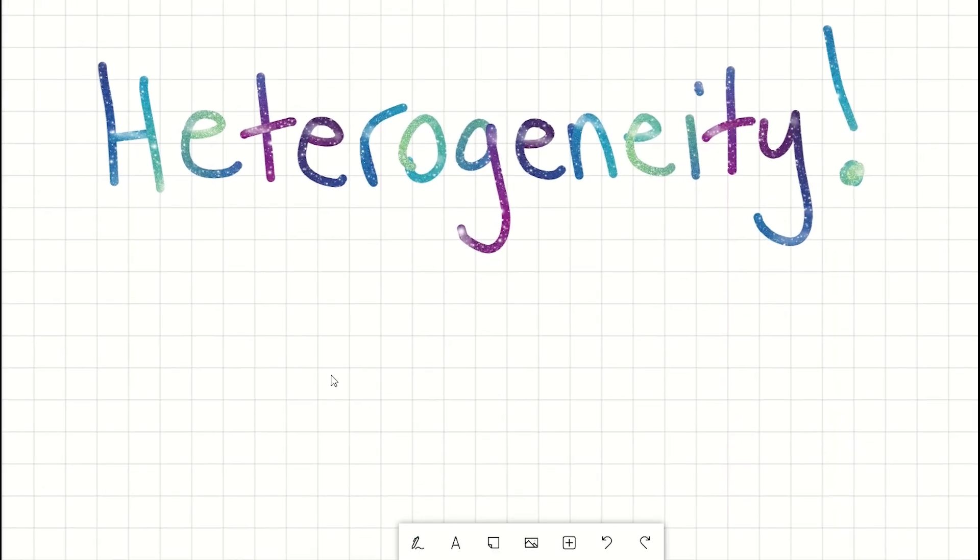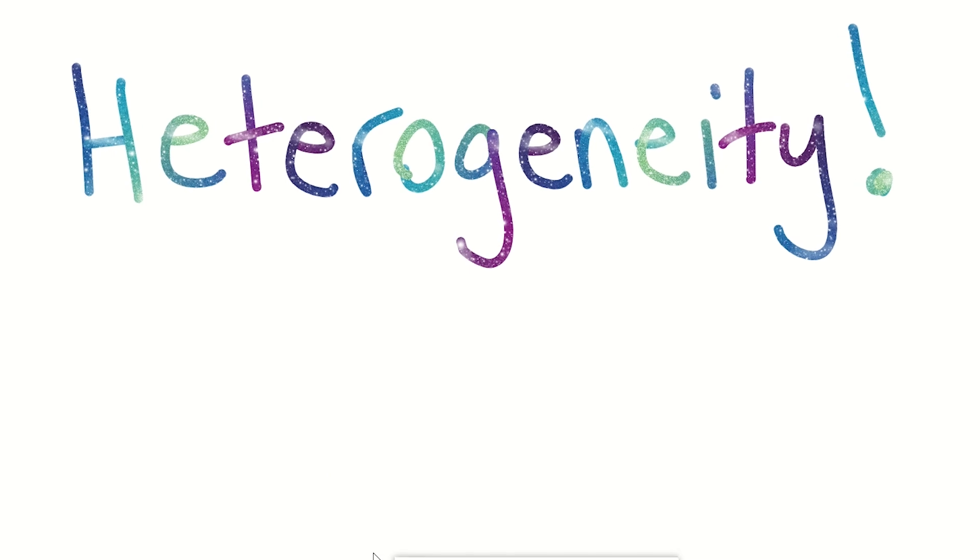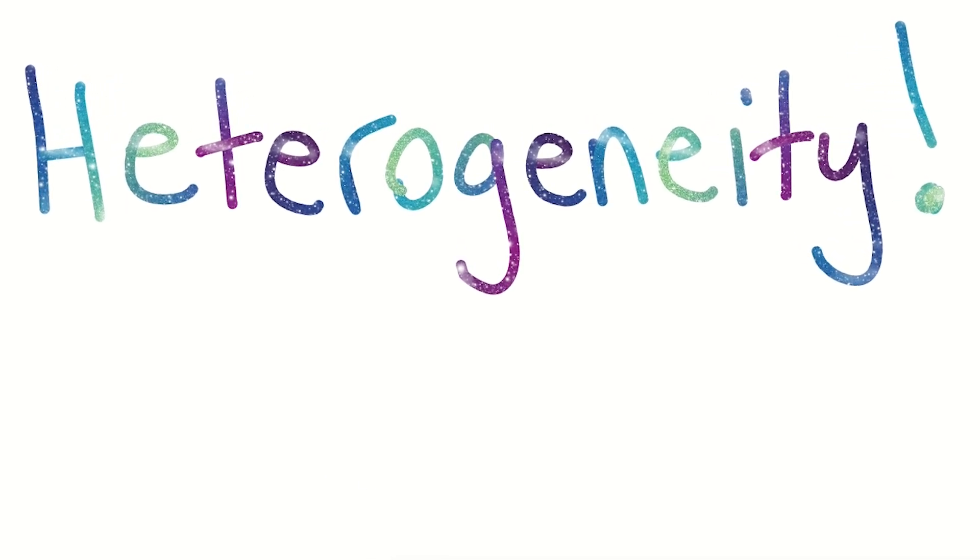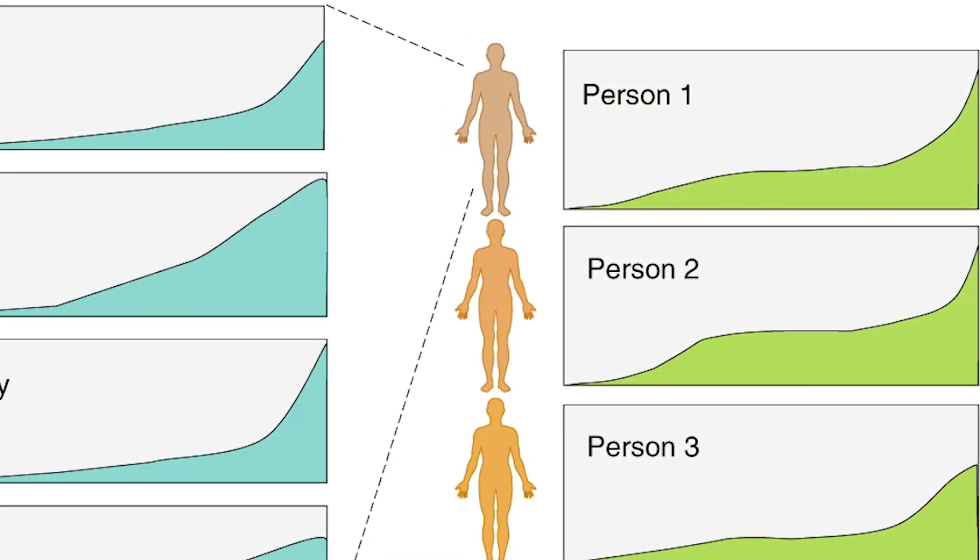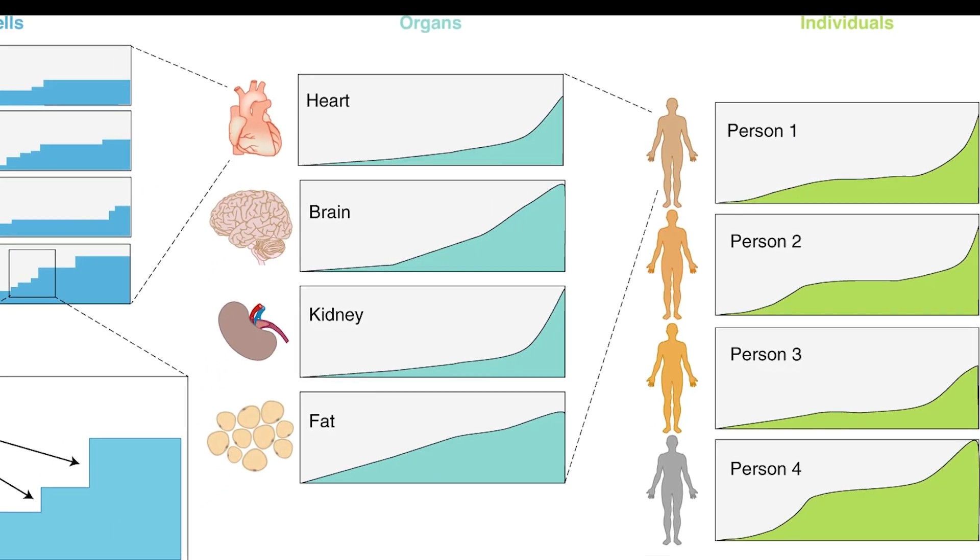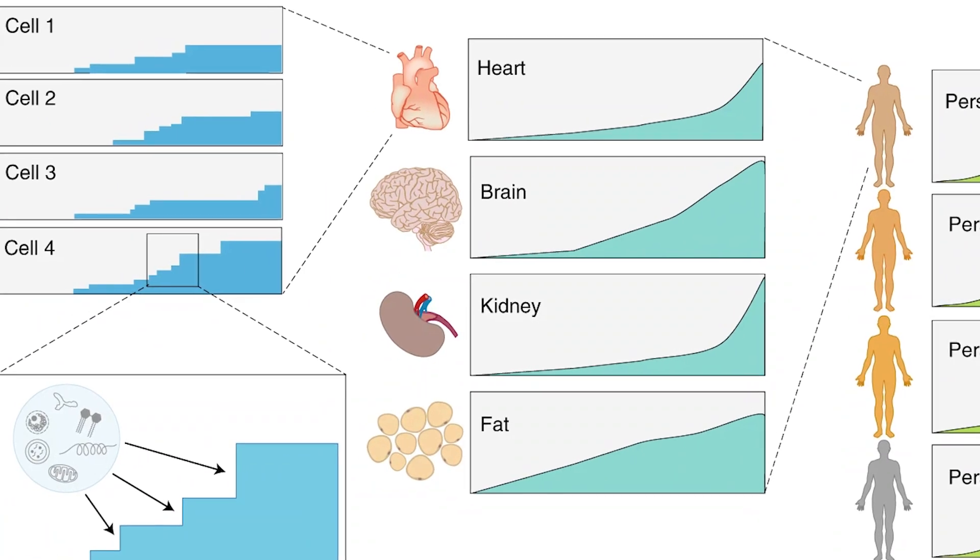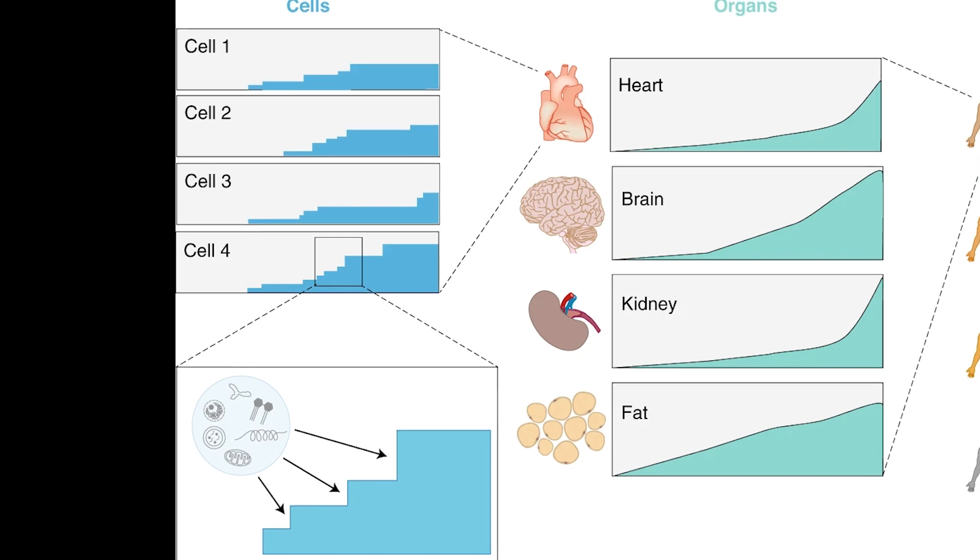Heterogeneity. Some scientists love this word and some not so much. But I think it can be really informative. We know that people age at different rates and different organs and tissues also seem to age at different rates. But how do we interpret those differences and use that understanding to see what the causes of aging may be?